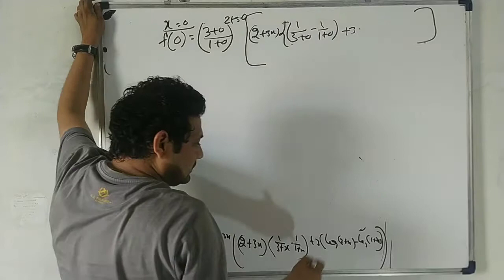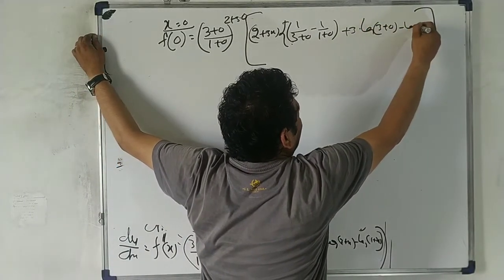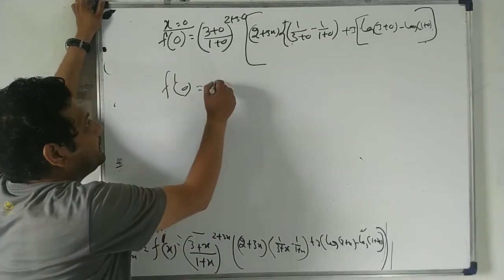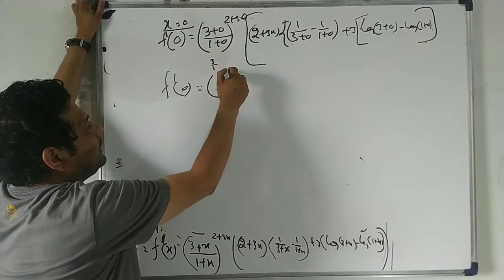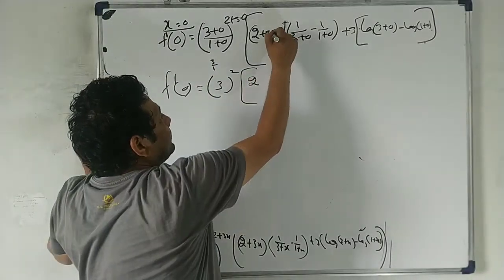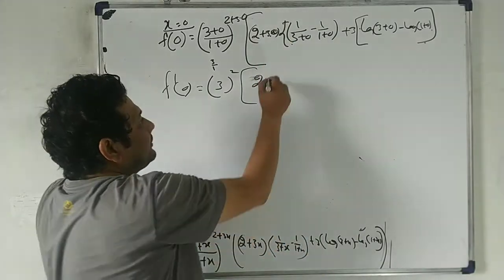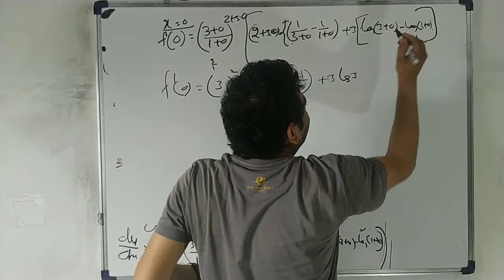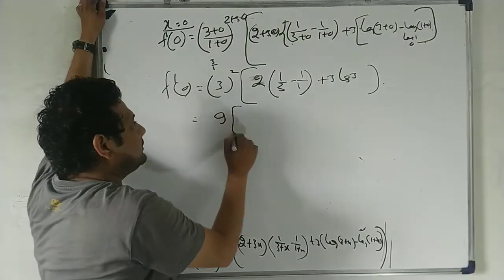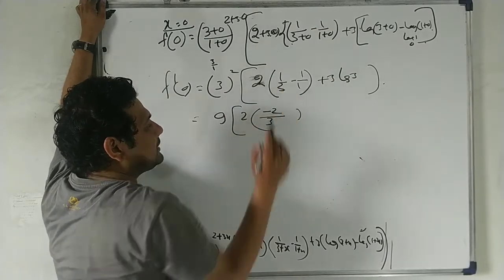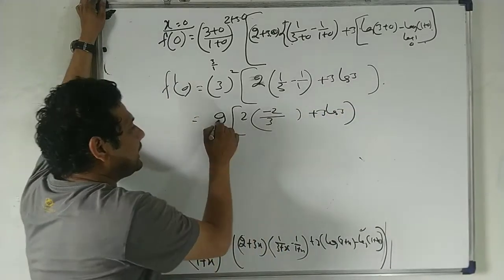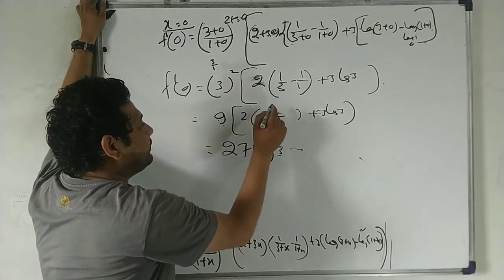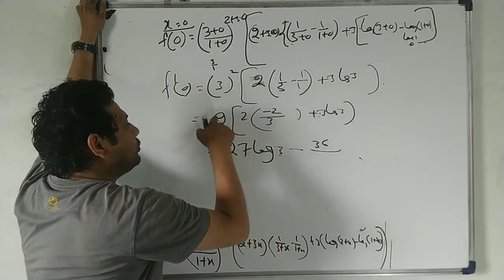Continuing simplification: plus 3 × [log(3+0) − log(1+0)]. So f'(0) = 3 × (1/3 − 1) + 3×(log3 − log1). Since log 1 = 0, this becomes 3 × (1/3 − 1) + 3 log3. Taking LCM: 3 × (1−3)/3 = −2, plus 3 log 3. Final answer: −2 + 3 log 3, or with log: 27 log 3 − 12/3.